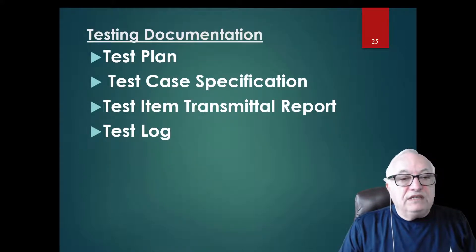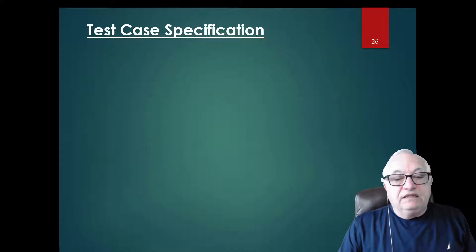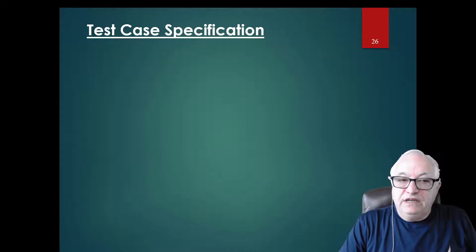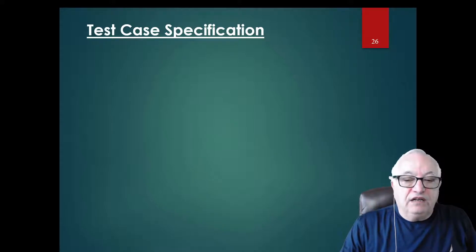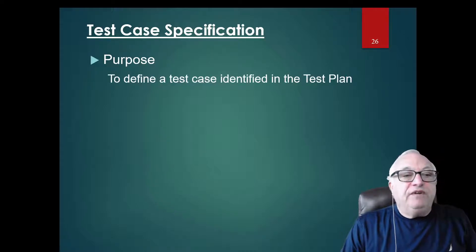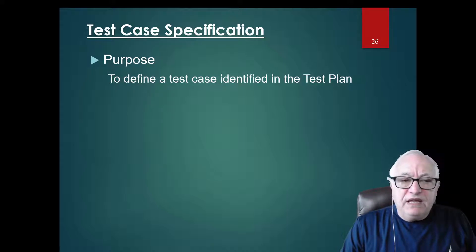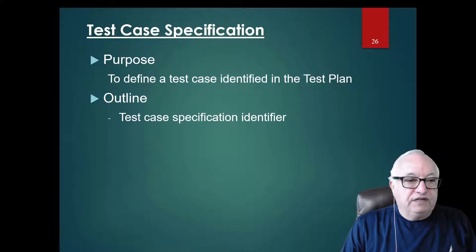So we're done with the test plan. Now let's talk about the test case specification. In general, the test case is where you write all the steps to perform a single test. Each specification addresses one test, and you put step-by-step what you have to do — the inputs, outputs, test setup. For each item in the test plan that you're going to test, you create one of these test case specifications.